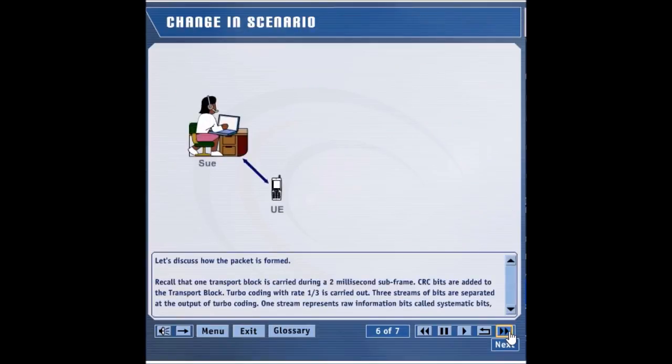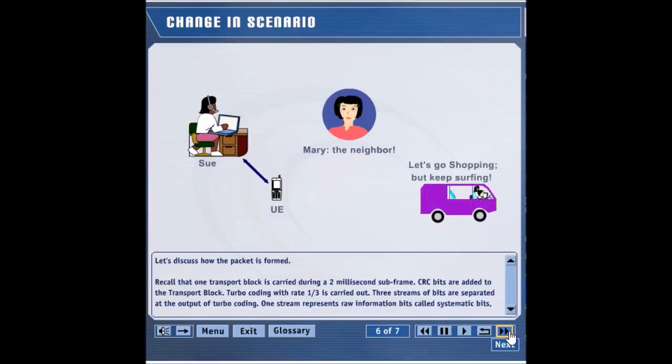Sue is browsing CNN's web page when her doorbell rings. Sue's neighbor, Mary, wants Sue to accompany her to a shopping mall. Since Sue is in the middle of viewing a CNN news story, she takes the laptop with her and hops into the passenger seat of Mary's minivan.